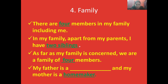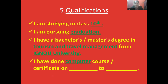The fifth step is qualifications. The interviewer will definitely ask about your qualification — whether you have done graduation and what you are currently pursuing. You can say 'I'm pursuing graduation,' 'I have done a bachelor's from Delhi University,' or mention any certificate or computer course. You can mention the university name as well.